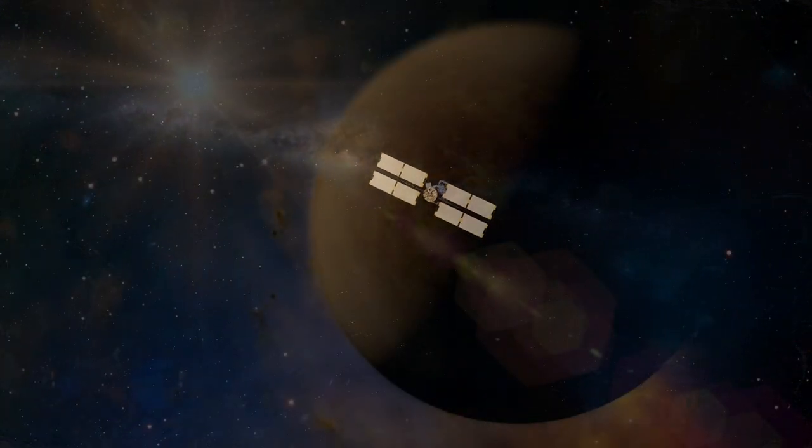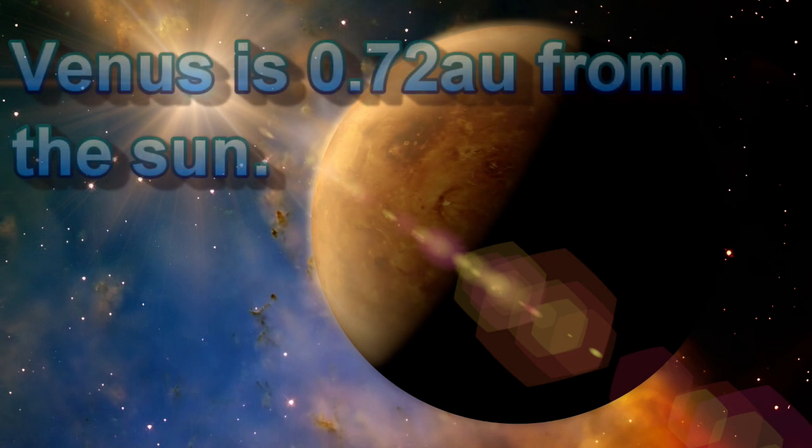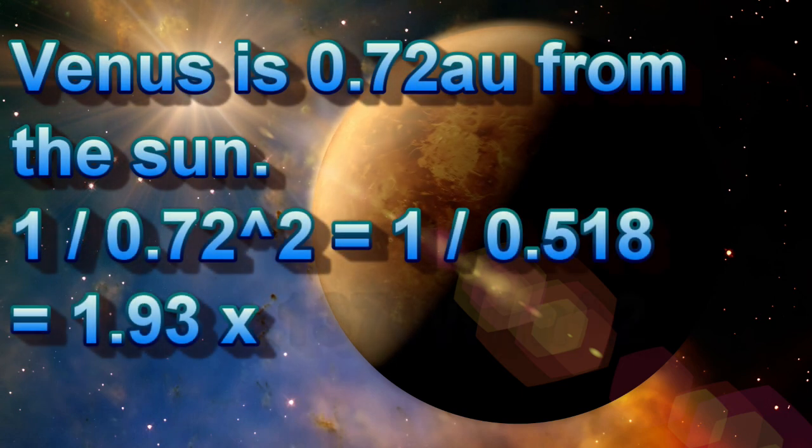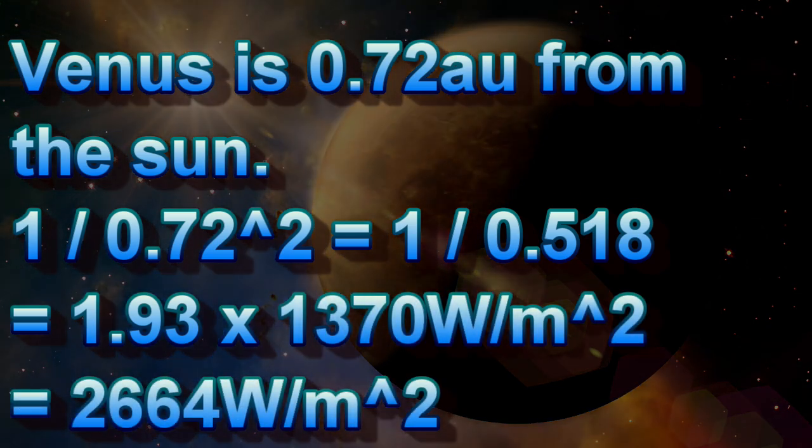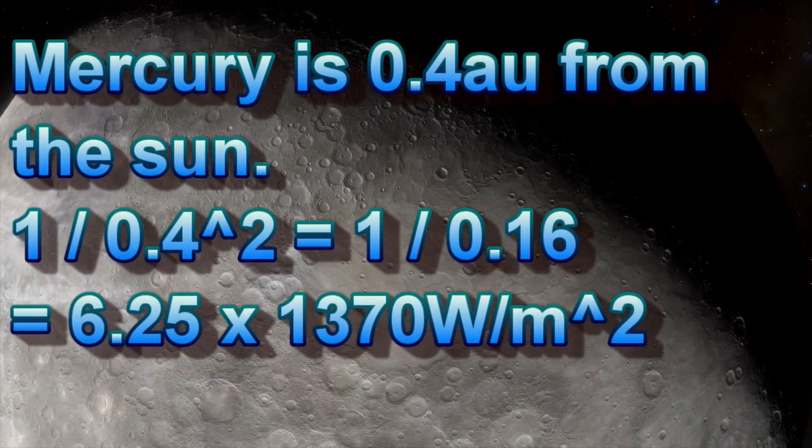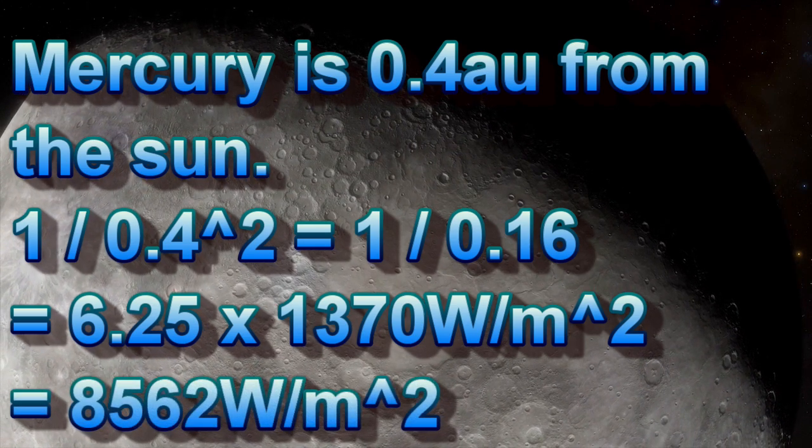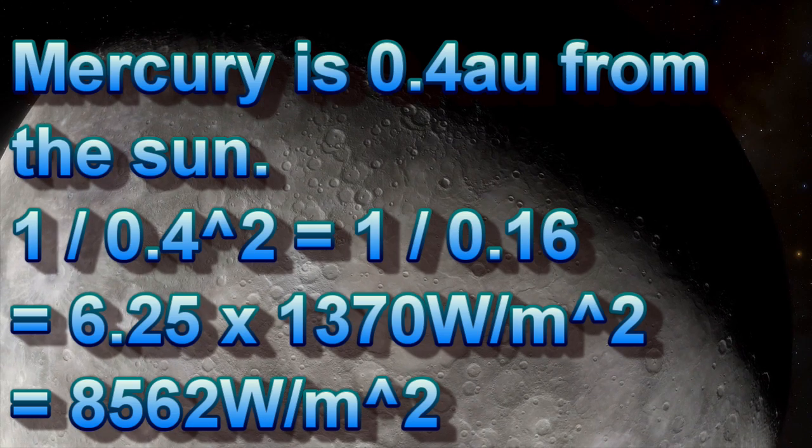Spacecraft operating around Venus, which is 0.72 astronomical units from the sun, will have almost twice as much power available per square meter than a ship in orbit around the earth or moon. At Mercury, which is 0.4 astronomical units from the sun, that power will be 6.25 times more than what's available at earth lunar orbit. This could be a very effective power and propulsion system for ships operating between the orbits of Venus and Mercury.